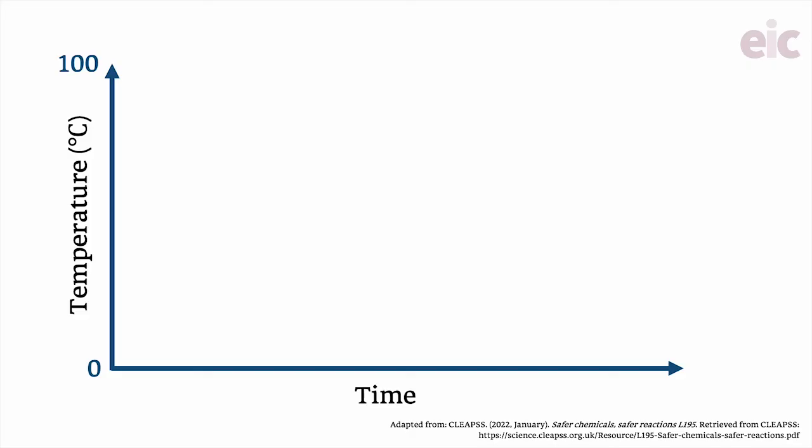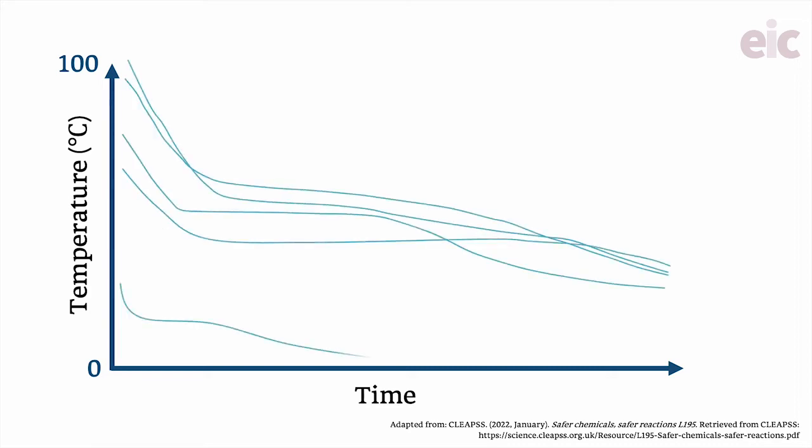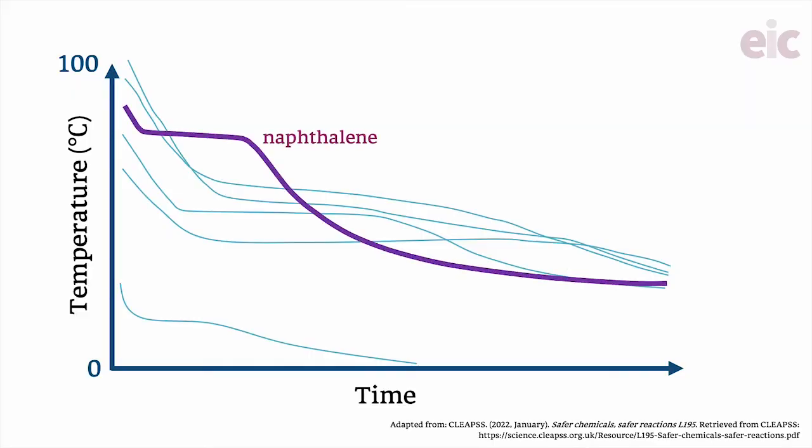We all have our go-to substances for a cooling curve experiment with our classes, but did you know that Kleeps had undertaken a survey of a number of different types of substances that might be found in the stock cupboard to see which ones work best? In L195 they have commentary and sample cooling curves collected from a range of candidates, along with potential pitfalls that the wrong choice or poorly managed practicals could open up. It's worth checking out — although I've never tried using naphthalene, it turns out it works really well for this experiment.